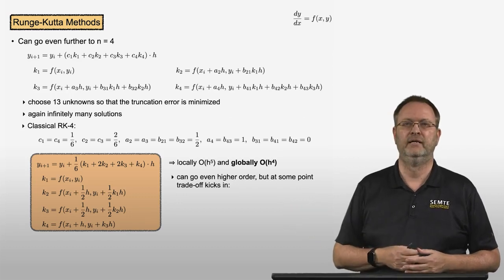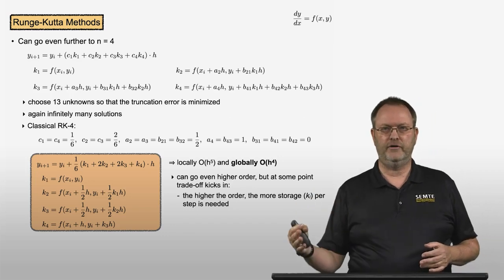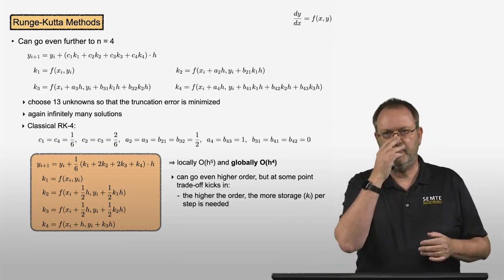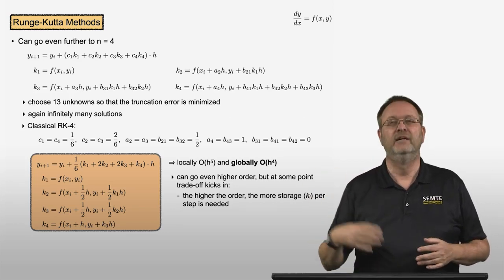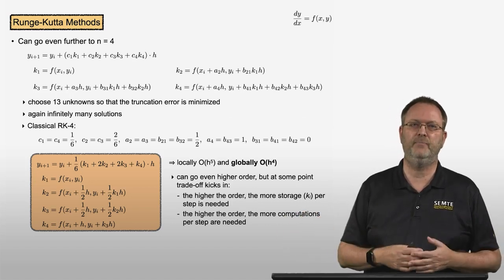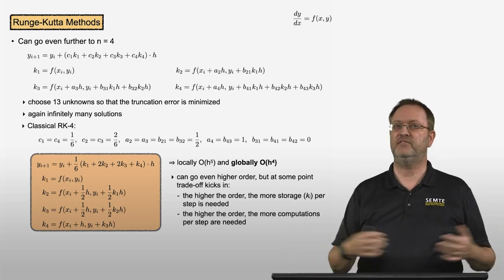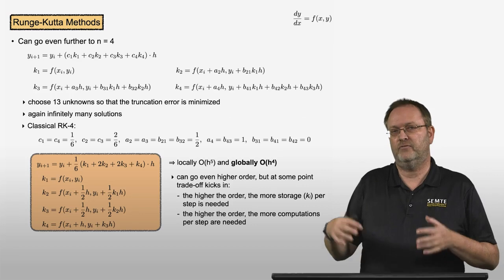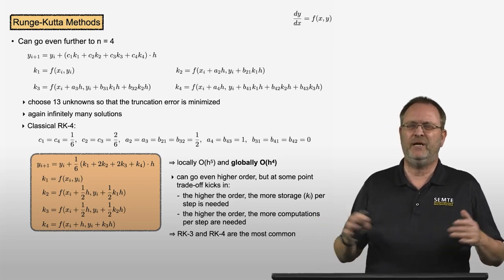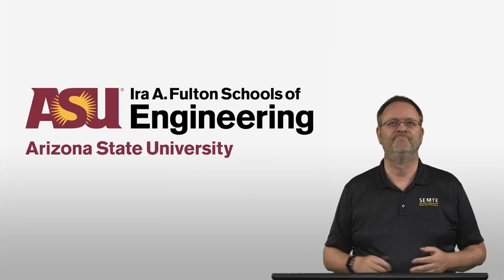We can go even higher order by bringing in more intermediate slopes, but trade-offs start to kick in. The higher the order, the more storage we need to store all intermediate k values, and the more computations we need per step — evaluating a new right-hand side at each new x, y value. If these evaluations are costly, it significantly impacts overall computation cost. Therefore, in typical engineering applications, RK3 and RK4 are the Runge-Kutta methods most commonly used. Thank you for watching.